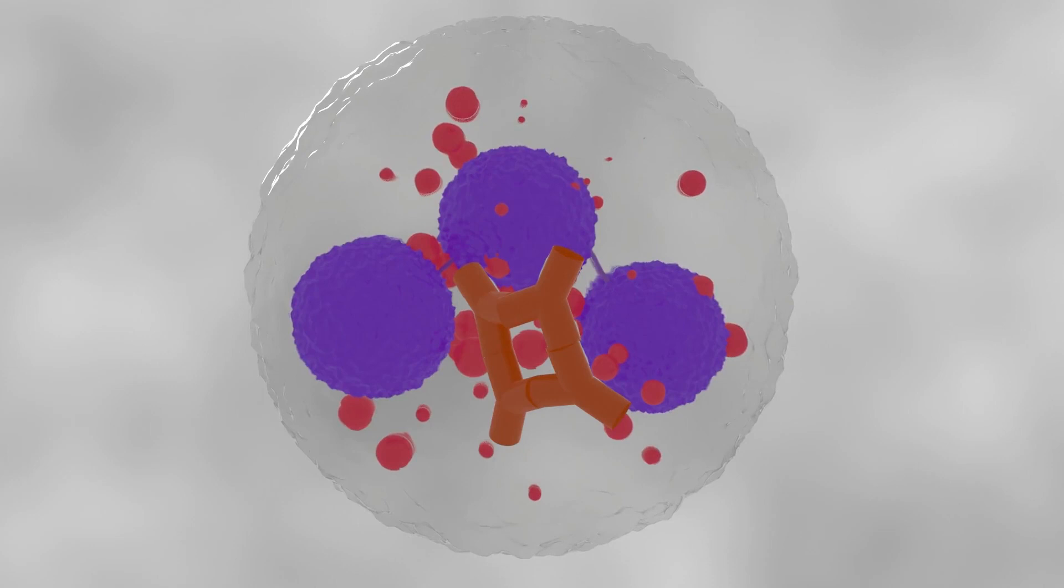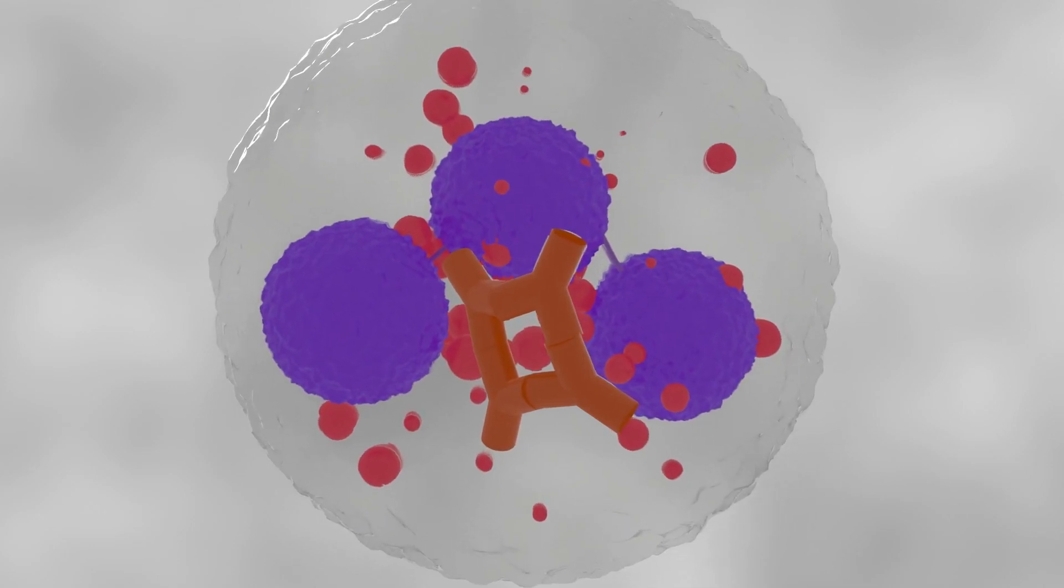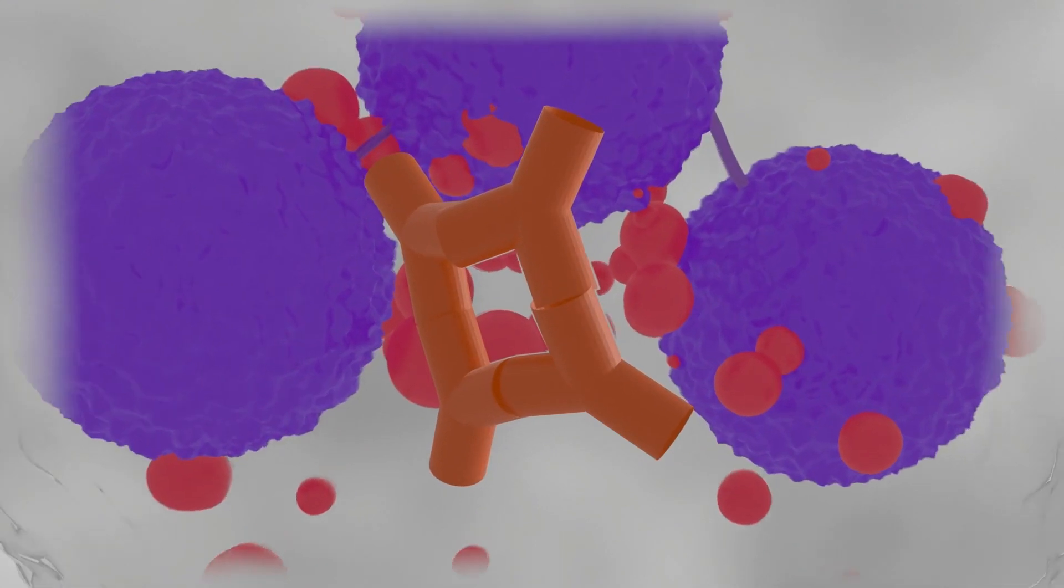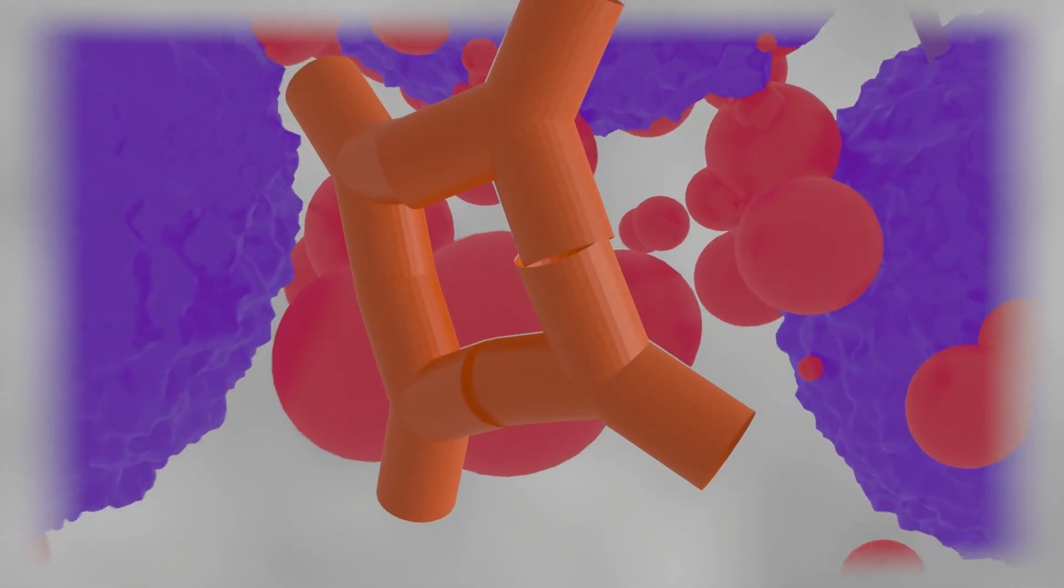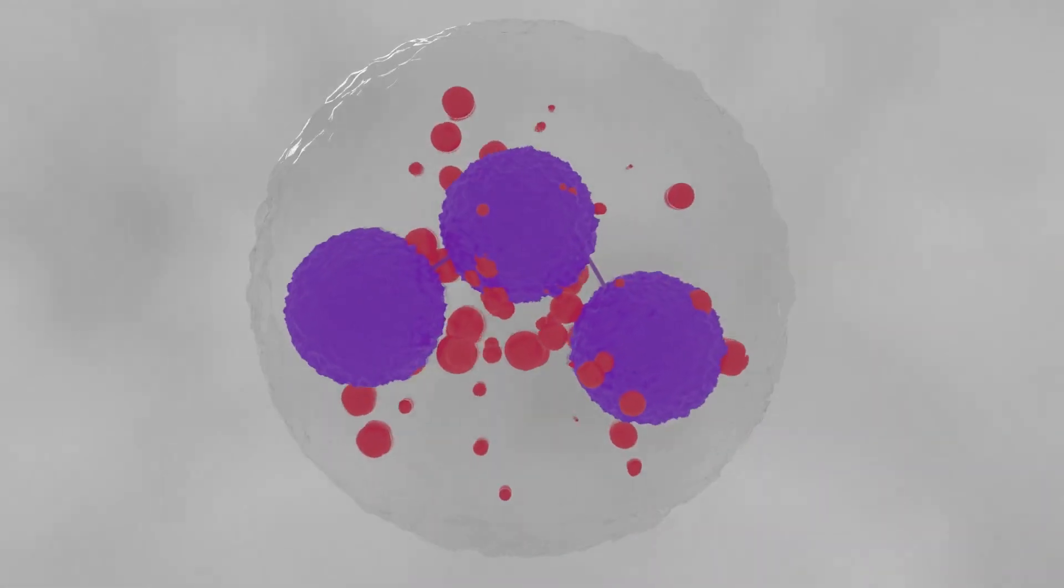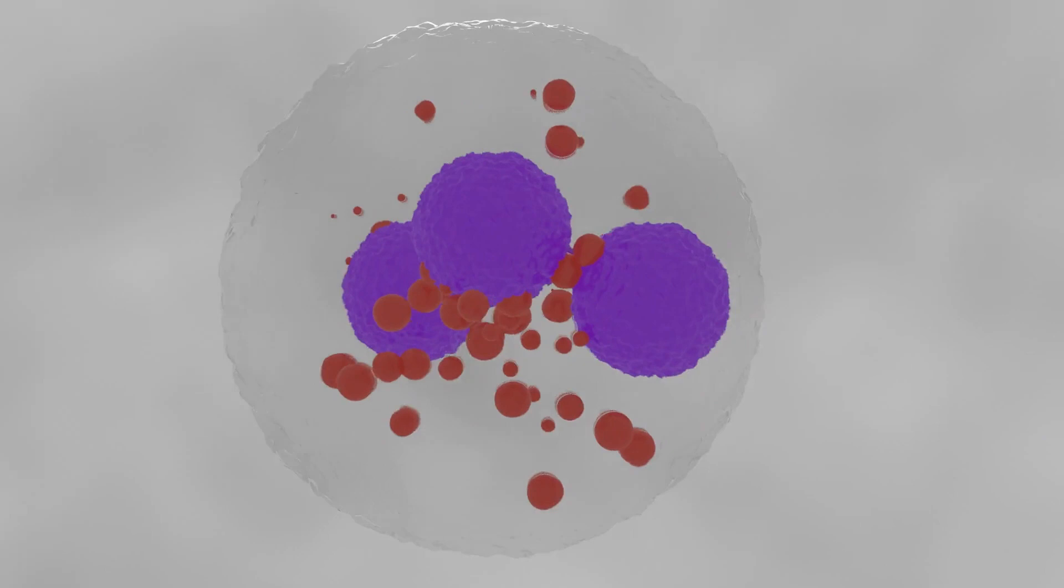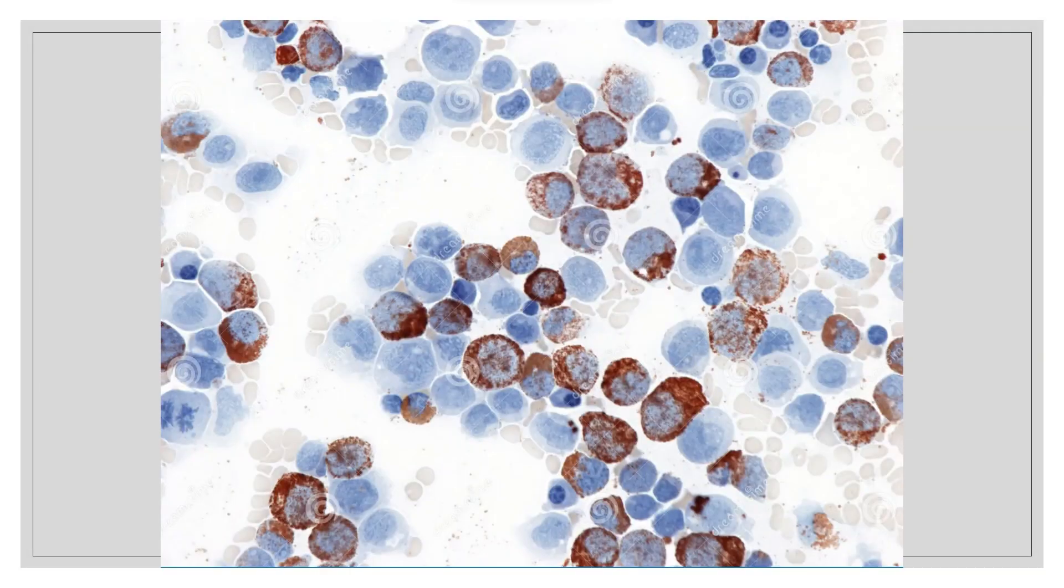Peroxidase in leukocyte granules oxidizes the benzidine to form insoluble, stable, and non-diffusible reaction product in presence of hydrogen peroxide. This product is colorless to blue or brown derivative which is localized at the site of the enzyme.